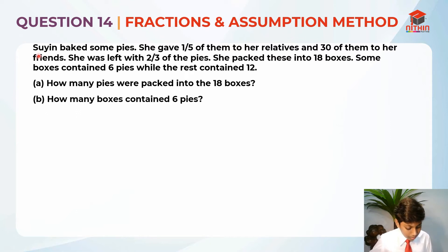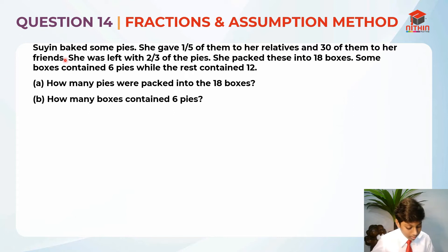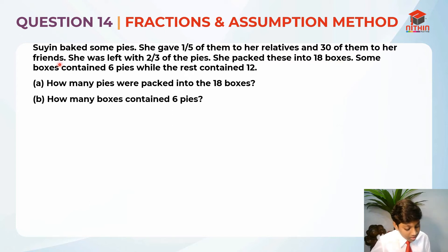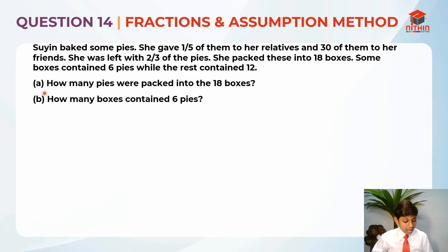So Su Yun baked some pies. She gave one-fifth of them to her relatives and 30 of them to her friends. She was left with two-thirds of the pies. She packed these into 18 boxes. Some boxes contain six pies while the rest contain 12. Part A: how many pies were packed into the 18 boxes? Part B: how many boxes contain six pies?